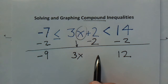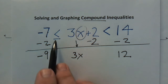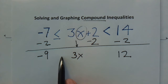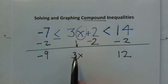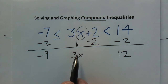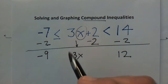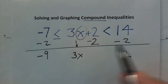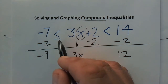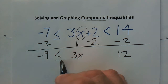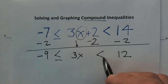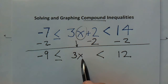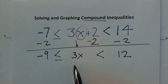Before bringing down the inequality signs, I ask myself a very important question: did I divide by or multiply by a negative? In this case, no — all we did was subtract, so the signs stay exactly as they are. If I had divided by or multiplied by a negative, I would have to flip all the signs. Don't forget to check for that.